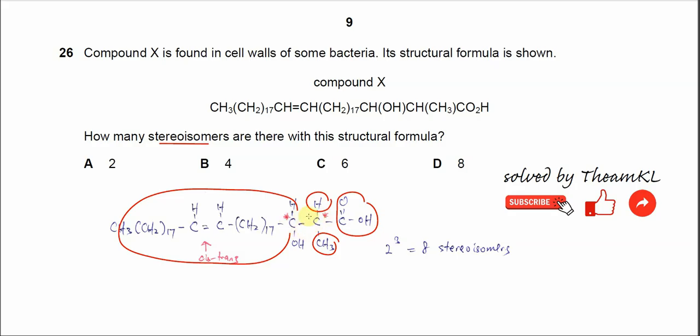So now there are two chiral carbons and one C=C double bond and they can form stereoisomers. Try not to add all together two plus two plus two. It's not like this. You should use 2 cubed. So total is eight stereoisomers. D.